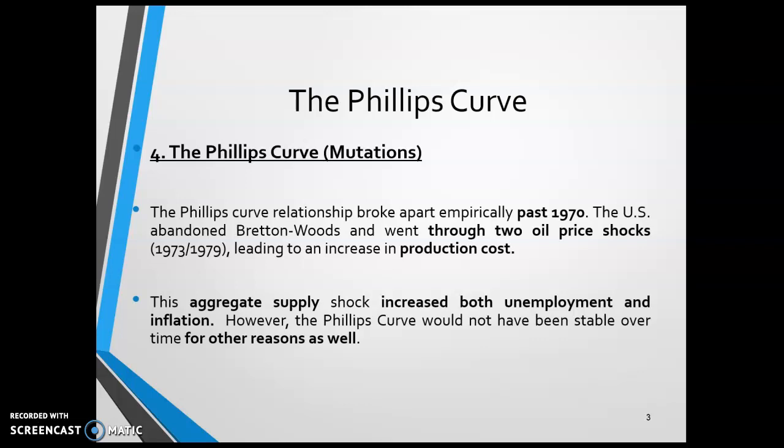If the aggregate supply curve shifts to the left, we see two things. For one, we see lower production and an increase in unemployment. But because production costs increased, we also see an increase in prices. That, needless to say, suggests a positive relationship between inflation and unemployment. This scenario is sometimes referred to as stagflation, and that's inconsistent with the Phillips Curve, which states the opposite.